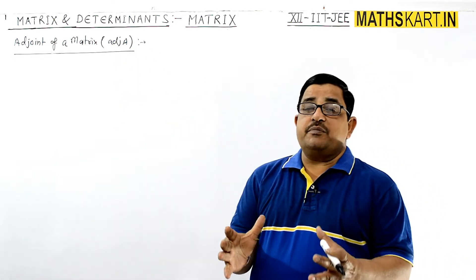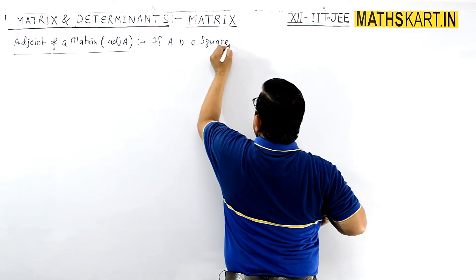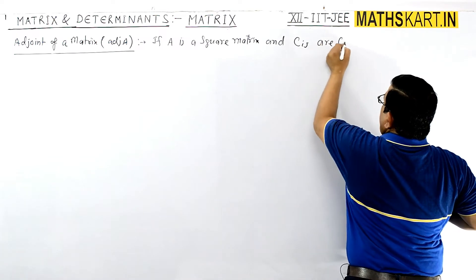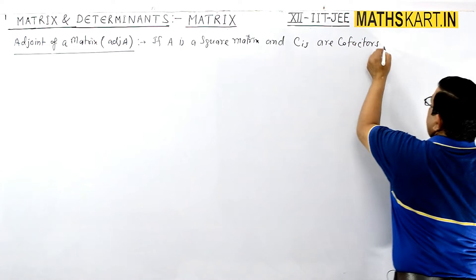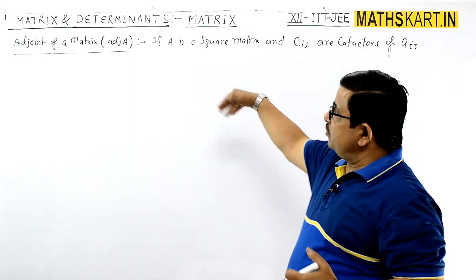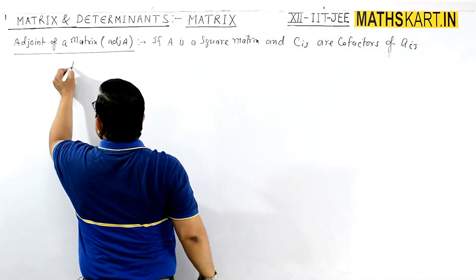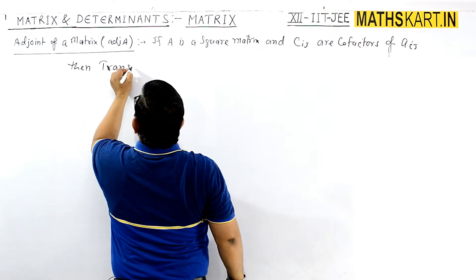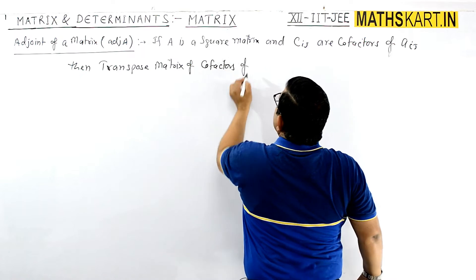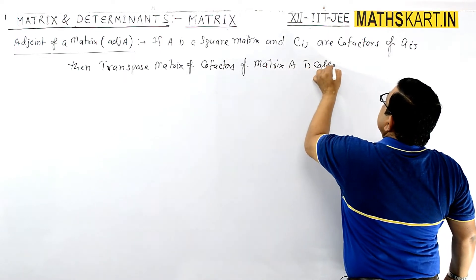It is necessary that matrix A is a square matrix. Now if A is a square matrix and C_ij are the cofactors of A_ij, then the transpose matrix of cofactors of matrix A is called the adjoint of A.